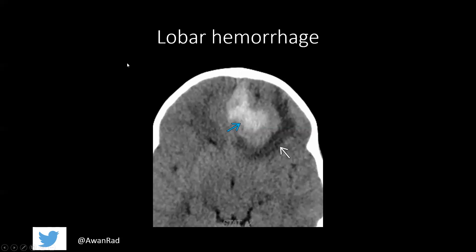Lobar hemorrhage is when you get hyperdensity confined in a lobulated contour within a lobe of the brain. This is the left frontal lobe. The hypodense or darker area surrounding it is edema around this lobar hemorrhage — it's within the parenchyma of the brain itself.